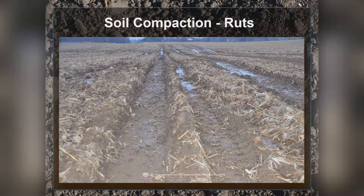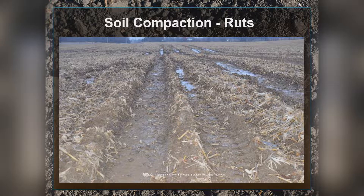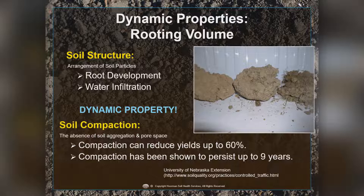Looking at soil compaction and ruts: when soil is rutted, you get a depression, but right next to it there's a little hump. Soil structure is related to the arrangement of soil particles — it's all about root development and how water infiltrates. When we look at soil compaction, we're really looking at the absence of soil aggregates and pore space. Research from Nebraska shows compaction can reduce yields up to 60%, and compaction can persist for almost nine years.